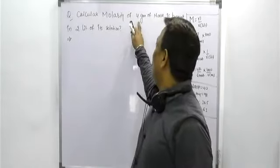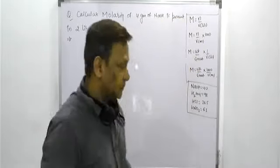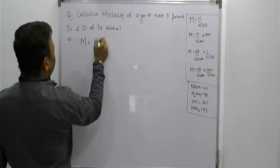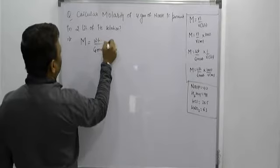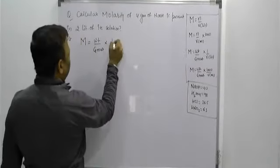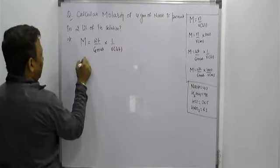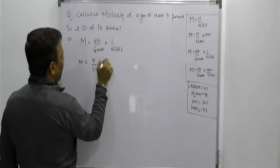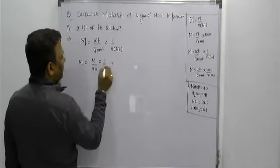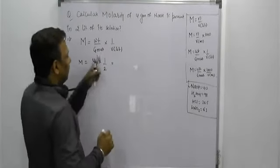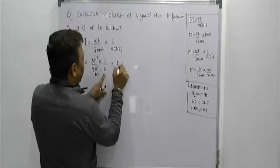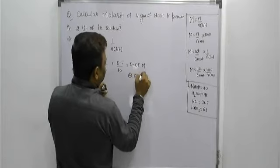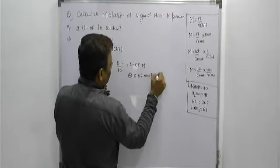Example 4: Calculate the molarity of 4 grams of NaOH present in 2 liters of its solution. Weight is given and volume is in liters, so use: M = (weight/GMW) × (1/V in L). Weight = 4 g, GMW of NaOH = 40, volume = 2 L. M = (4/40) × (1/2) = (1/10) × 0.5 = 0.05 molar, or 0.05 mole per liter.